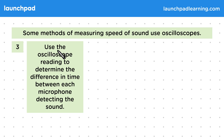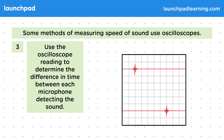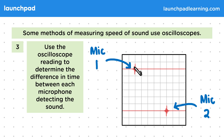Then in step three, use the oscilloscope reading to determine the difference in time between each microphone detecting the sound. Here we've set up the oscilloscope display so that we have a reading from the first mic on the top line and the second mic on the bottom. Since we used a short sound pulse, the readings are short signals instead of the full wave patterns we saw earlier. These signals show us the times the sound reached each microphone. Now to do our reading, we first want to adjust the timescale of the display so both these signals can easily be seen.